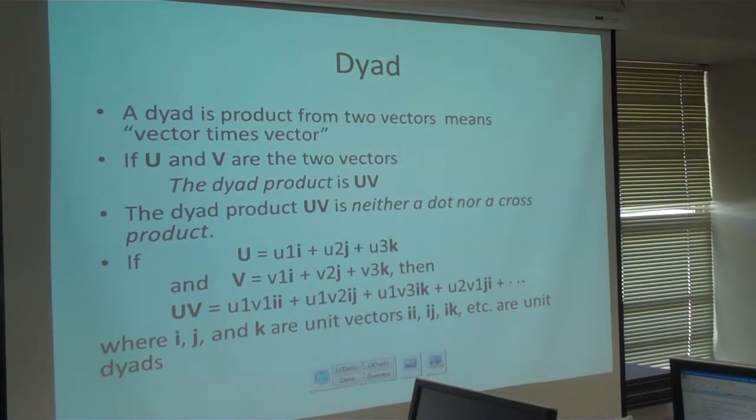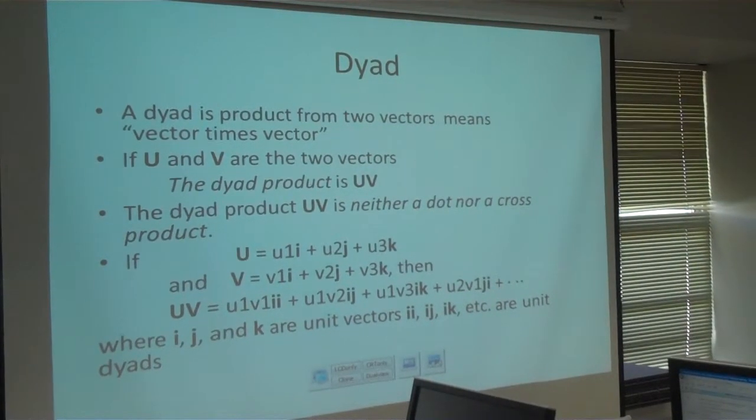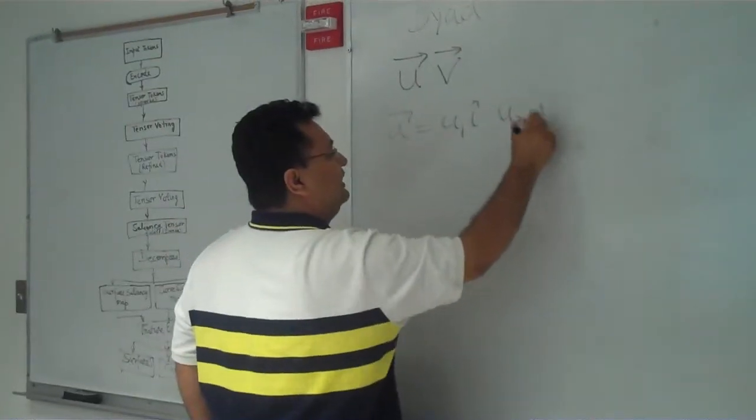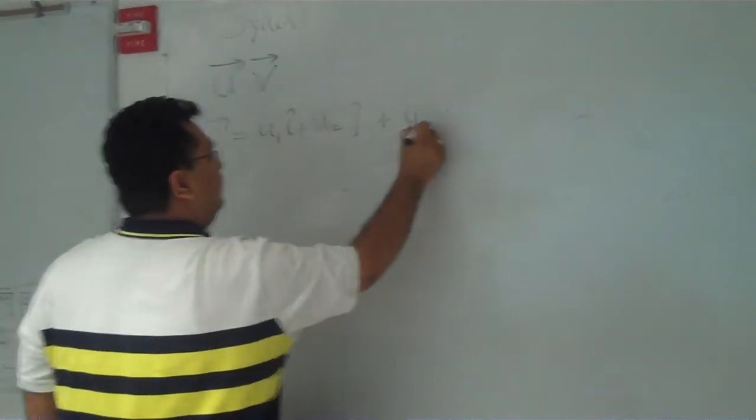This is having two directions, so this is vector times vector. This tensor is known as dyad. Suppose u equals to u1 i cap, u2 j cap, u3 k cap.